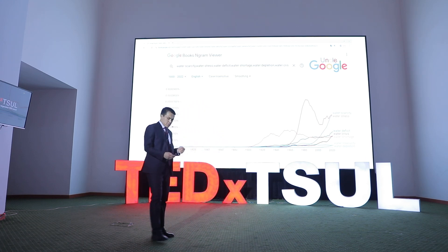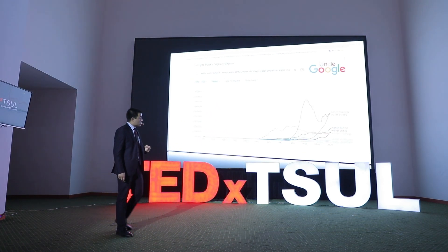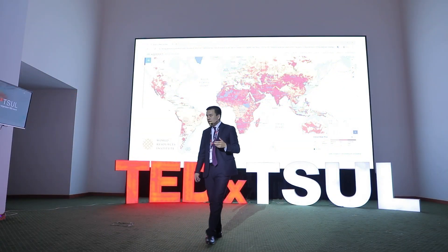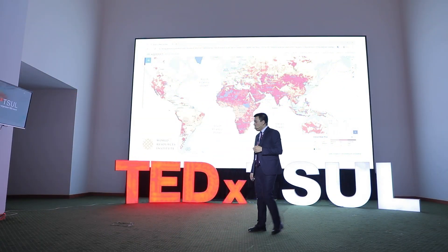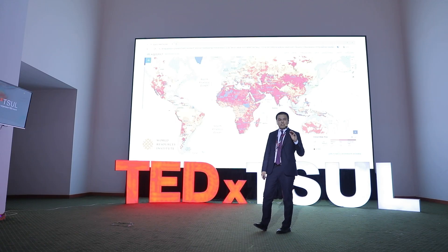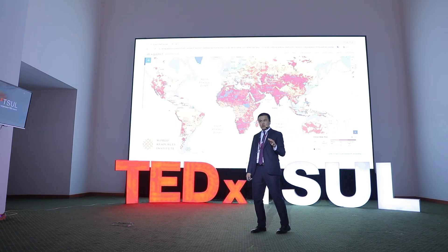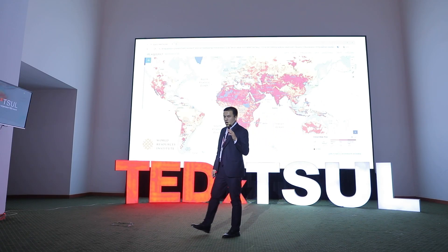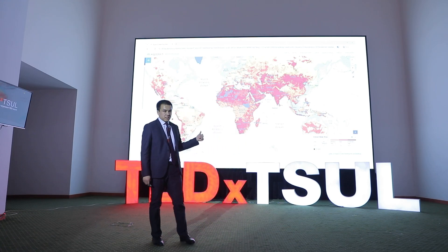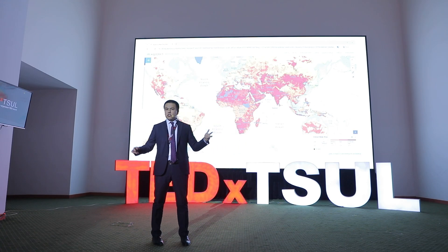Let's look at the graph provided by the World Resources Institute to analyze the water stress index. From here we can see that most of the countries that suffer from water stress are located primarily in the MENA region, in southern Africa, and wider Central Asia. That is where we are.